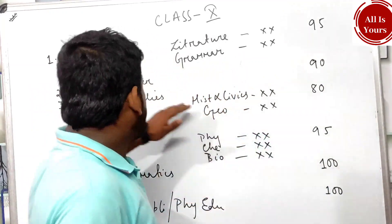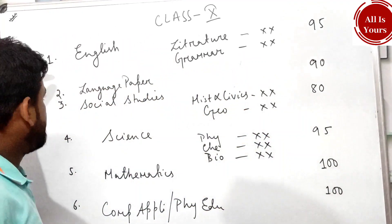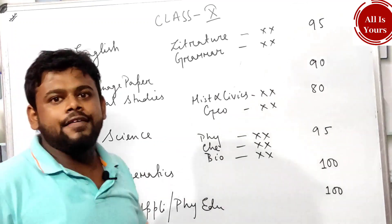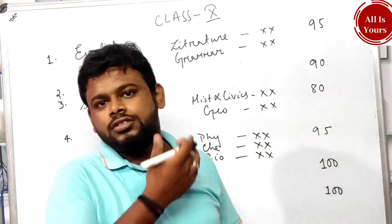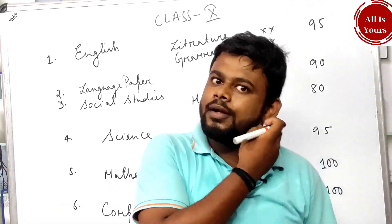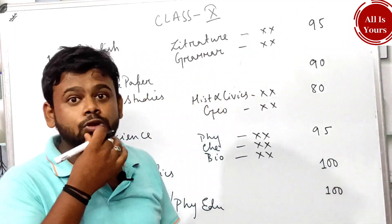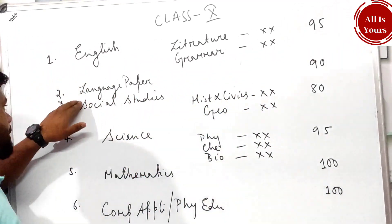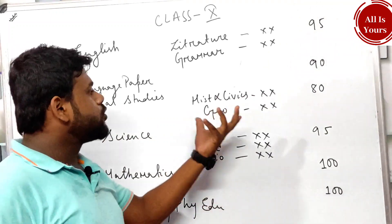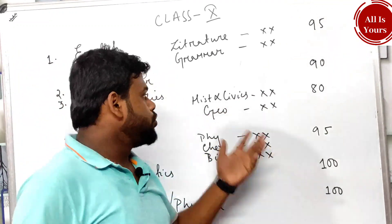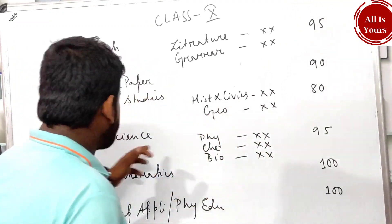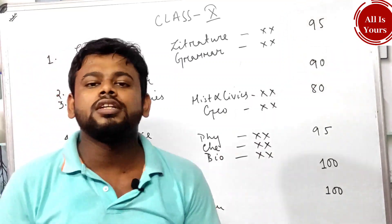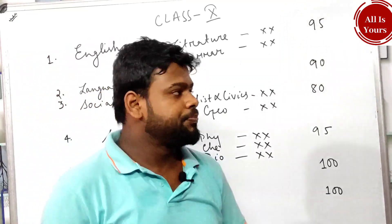As you know, English is a subject. Then there is a language paper — Hindi, Bengali, Sanskrit, Odia, Urdu, Malayalam, and many more. Social Studies is divided into two categories: History and Civics, and Geography. Then there is Science — Physics, Chemistry, Biology — Mathematics, and Computer Application or Physical Education.